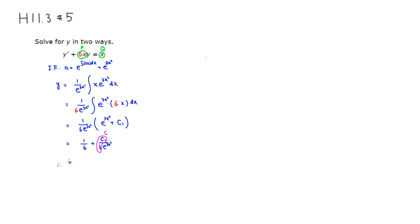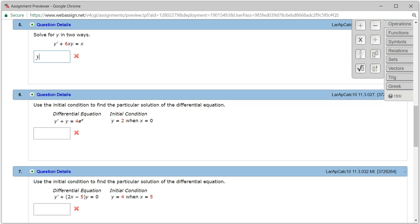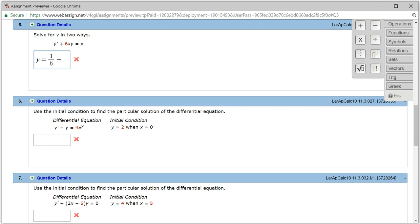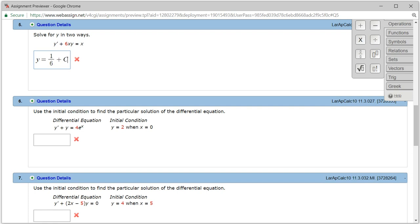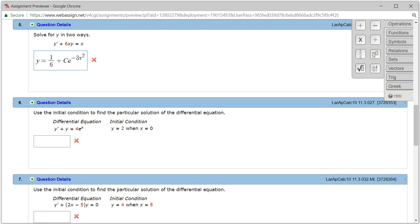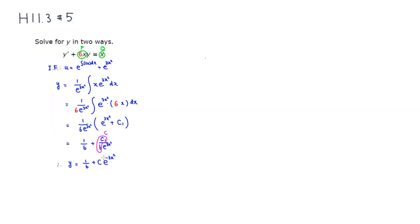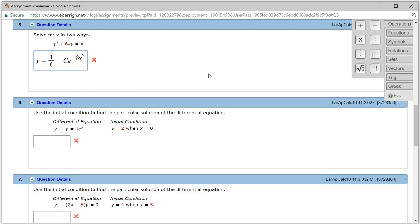So we're going to have this, so therefore, y is equal to 1 over 6, and plus some constant c, and I'm going to write this guy as e to the negative 3x squared. So let's type it in. So we got the y equals 1 over 6, plus e to the, actually I have to put the c times e to the, let's see, it was a negative 3x squared. Let's make sure, negative 3x squared. So we have that. Let's check the answer.